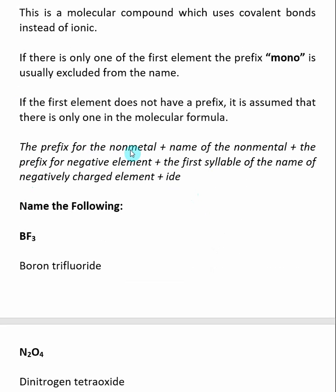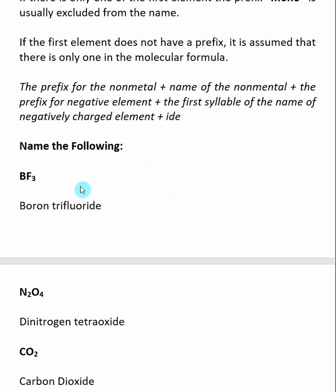The overall rules for nomenclature: you start with the prefix for the non-metal — so how many of the non-metal element is present in the molecular formula — then the full name of the non-metal, then the prefix for the negative element, which is the one on the right, then the first syllable of the name of the negatively charged element, and then ide.